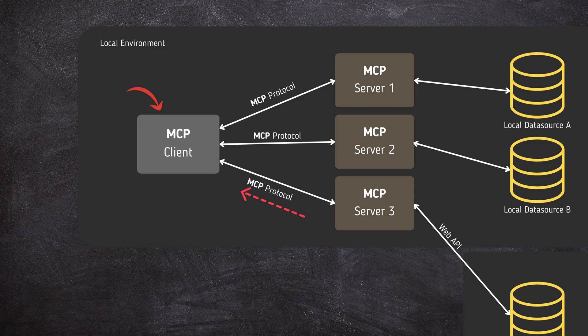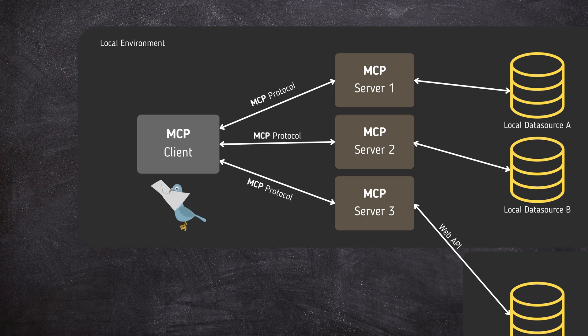The client translates the AI model's needs — for example, a function call or data request — into MCP protocol messages, and then relays the server's response back to the AI model or application. In short, the MCP client acts as the AI's messenger, handling communication with external systems via the MCP protocol.